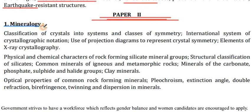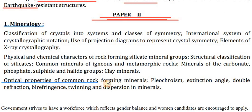In point number one of Paper 2, Mineralogy: classification of crystals into systems and classes of symmetry, international system of crystallographic notation, use of projection diagrams to represent crystal symmetry, elements of X-ray crystallography, physical and chemical characters of the rock-forming silicate minerals, structural classification of silicates, common minerals of igneous and metamorphic rocks, minerals of the carbonate, phosphate, sulfide and halide groups, clay minerals, optical properties of common rock-forming minerals — pleochroism, extinction angle, refraction, and birefringence, twinning and dispersion in minerals.